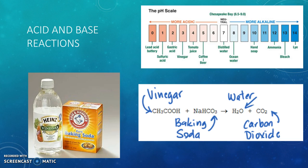Ocean acidification acts in the same sort of manner. Sea water is naturally slightly basic, and with the excess CO2 ions from pollution absorbed into the ocean, they react with the water molecules and create an increase in hydrogen ions, which lowers the pH of the water. Although we won't be seeing any explosions from this reaction, this shift in pH has been causing tremendous impacts to organisms and their ecosystems.